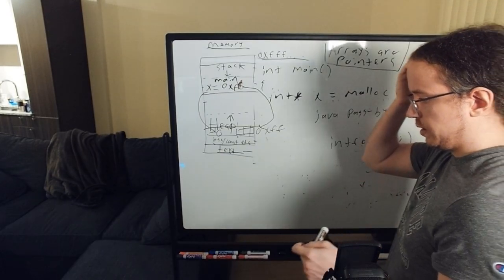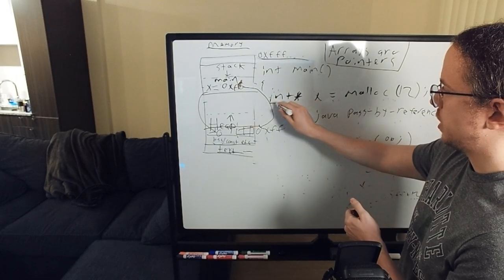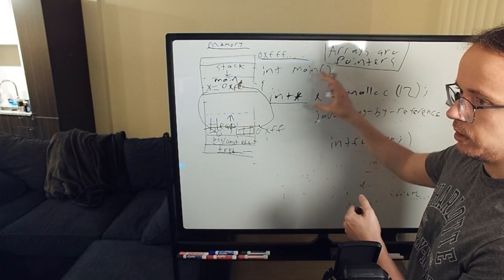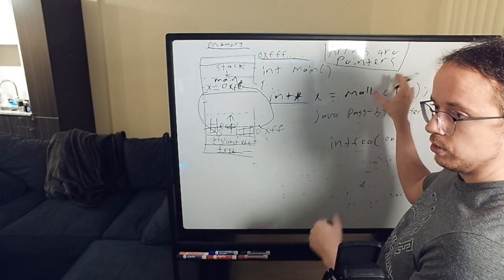So two key syntactical things. So one, again, to have a pointer, to have a memory address, you say star. You don't have to always use malloc. There some cases you want a memory address that for a variable that already exists.